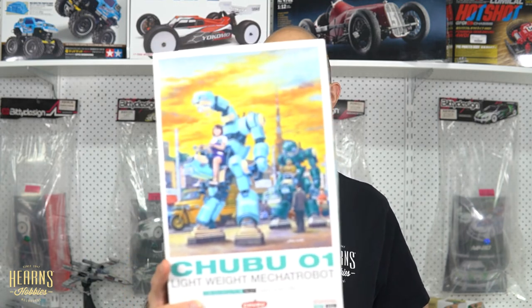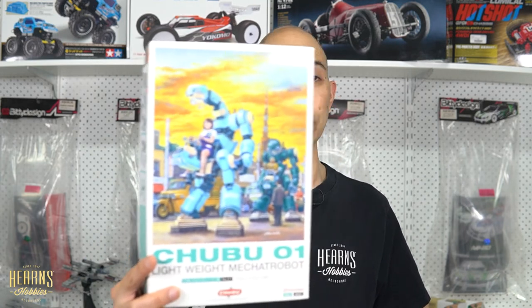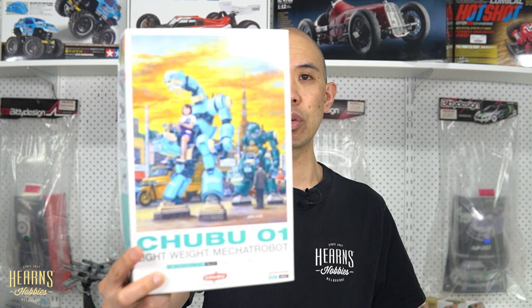All right, so that's my review of the Hasegawa 1:35 scale Chubu 01. There's actually two kits in one. I assumed it was one but there's two and you can build it as you can see on the box with the light blue armor with the dark green or you can mix and match to do whatever you like. So there you go, really funny little kit and quite interesting.